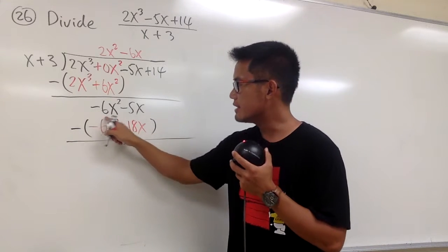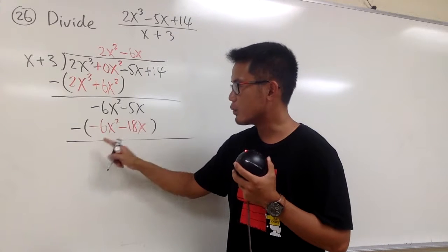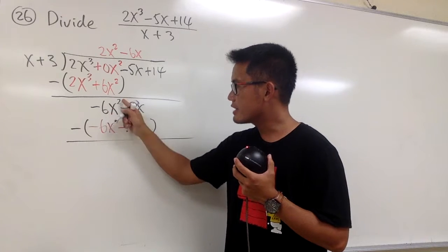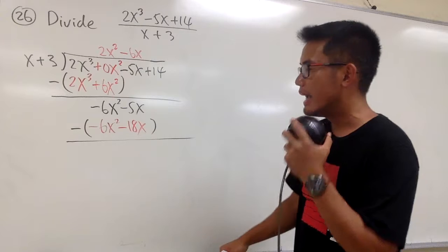Now, take a look. This is negative 6x squared minus negative 6x squared. In another word, it becomes a plus, right? Negative times negative becomes a plus. Negative 6x squared plus 6x squared is just zero, so they're out.